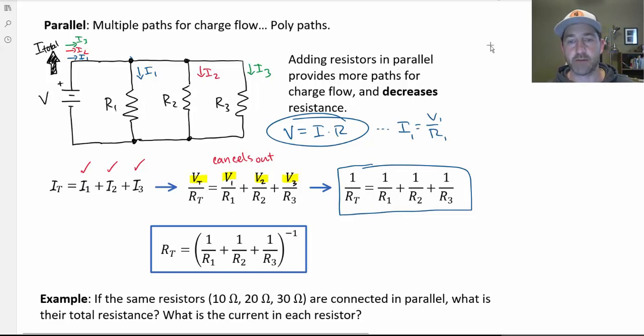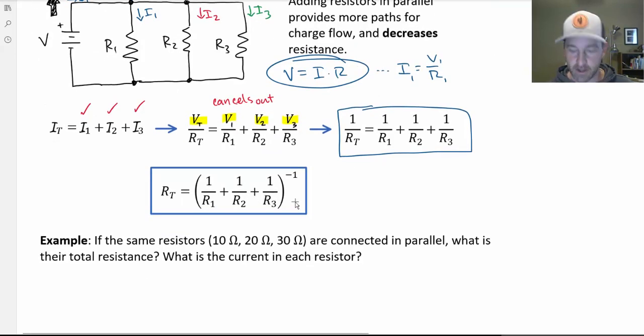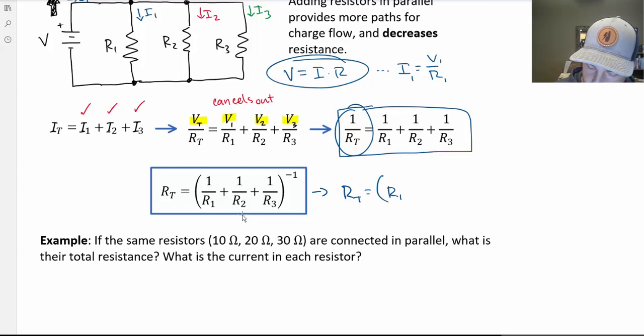Now in terms of putting that into a calculator, I much prefer to write it out like this. By taking the 1 over RT and inverting that, taking it to the negative 1 power, we get RT. In terms of typing, a lot of people have trouble. So I often write that RT equals parentheses R1 to the negative 1 plus R2 to the negative 1 plus R3 to the negative 1, and then all that gets taken to the negative 1 power.